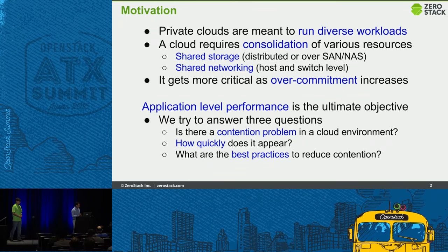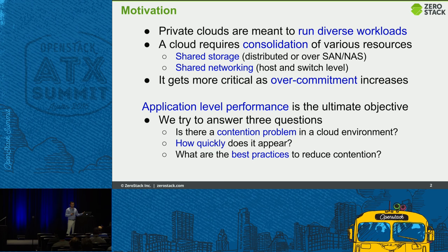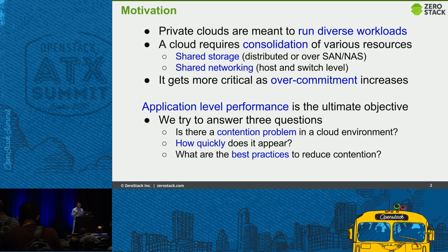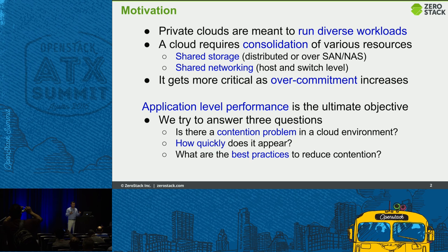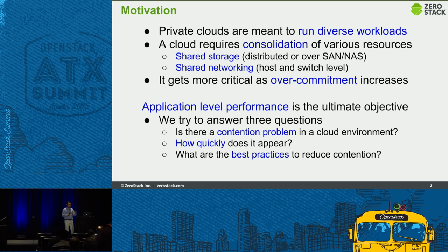The motivation for the talk is essentially, if you look at private clouds, they are designed to run diverse workloads — compute-intensive, maybe memory-intensive, storage-intensive, or network-intensive. Fundamentally, a cloud requires consolidation and pooling of resources, where you pool all your resources to create a layer of infrastructure that you can access using API calls. Not only just one person, but different people could be accessing the same infrastructure through API calls and getting resources very quickly.